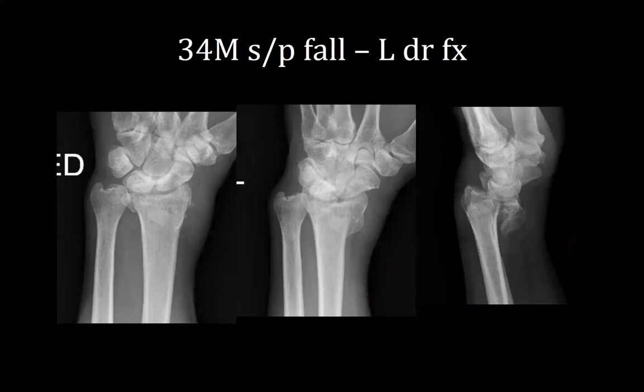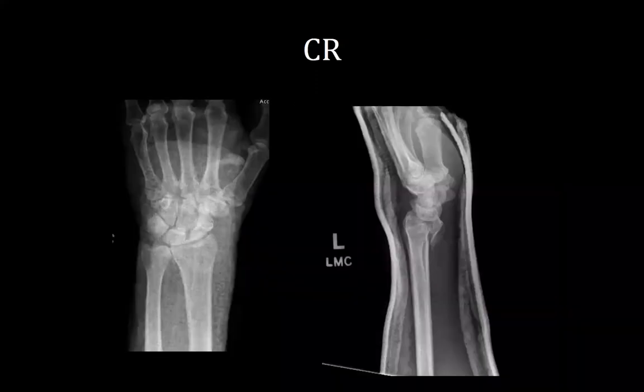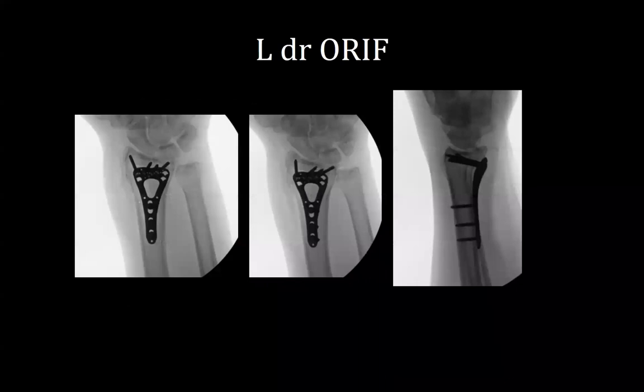First patient is a 34-year-old gentleman who fell and sustained a left distal radius fracture associated with a volar shear component and carpus subluxation. He was initially closed reduced by the on-call resident and placed into a sugar-tong splint, then taken the following day for a distal radius open reduction internal fixation.